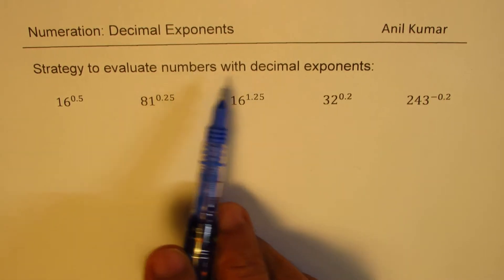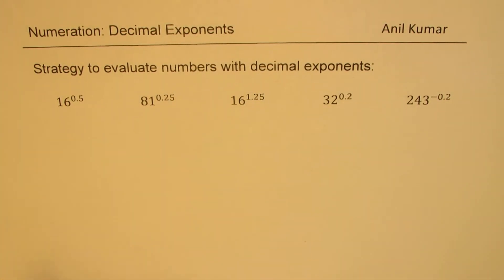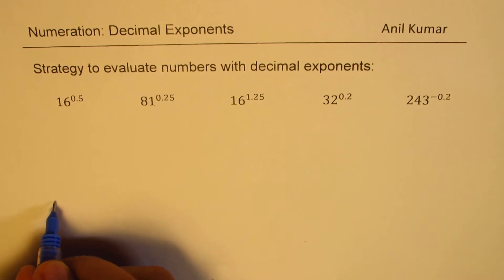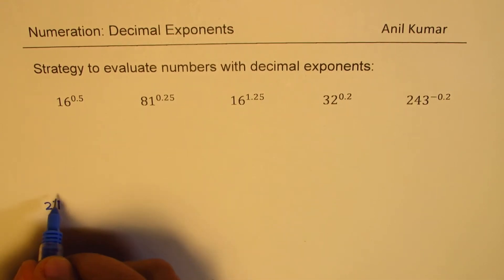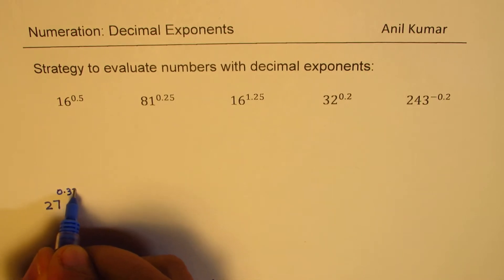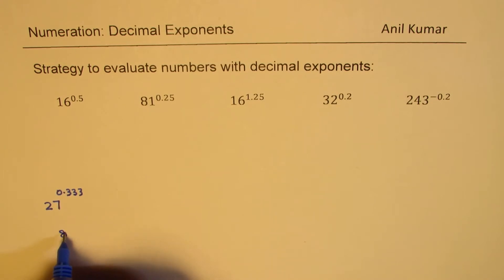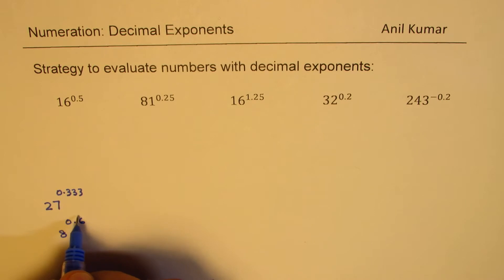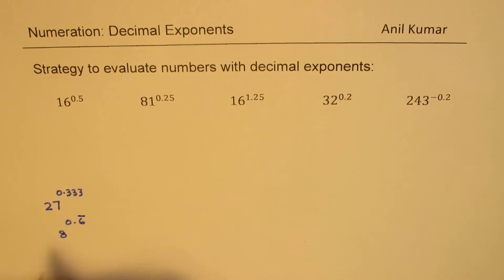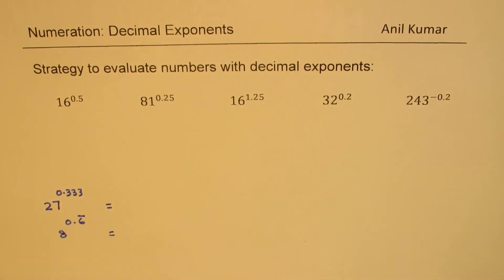For example, we could have: what is 27 to the power of 0.333 recurring? Or we could have 8 to the power of 0.6 recurring. So we'll also see how to evaluate these exponents.